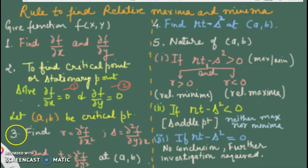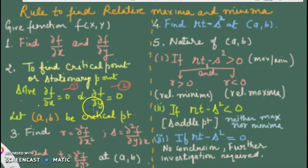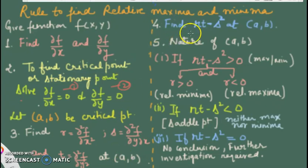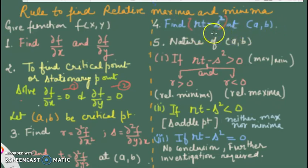If (a, b) is the solution of these two equations, it is known as a critical or stationary point. The next step is the double derivative test, where we find the nature using second-order partial derivatives. We differentiate ∂f/∂x and ∂f/∂y once more with respect to x, y, and both. We use the notation: r = ∂²f/∂x², s = ∂²f/∂x∂y (mixed), and t = ∂²f/∂y². We calculate these at (a, b) and then evaluate the expression rt − s² at (a, b).